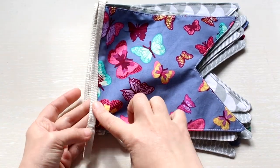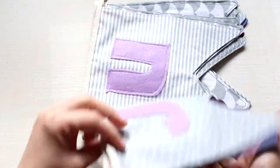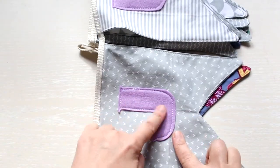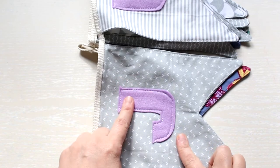Around 3 meters of bias binding or white ribbon for assembling the bunting and some felt for the letters. A 12 by 12 inches sheet of felt will be just enough.